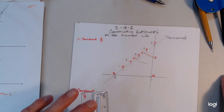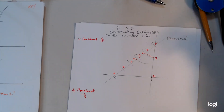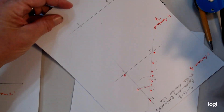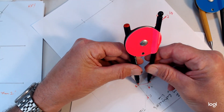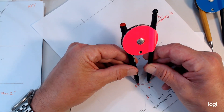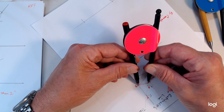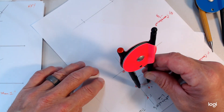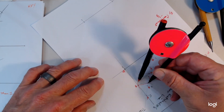So I'm going to adjust my compass from X to Y — be very accurate. This step here, if you're not accurate, your construction is not going to look good. You've got to really make sure that the compass is set correctly. From X to Y.